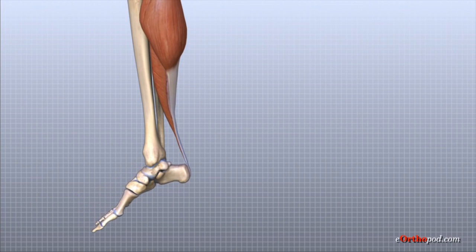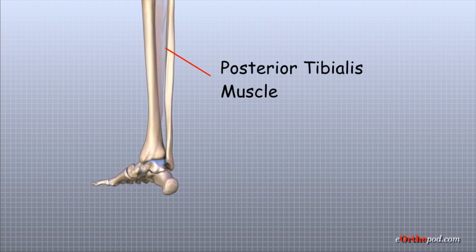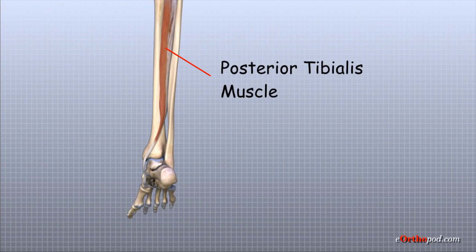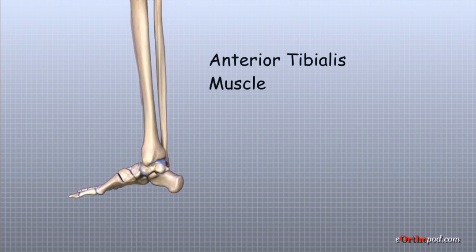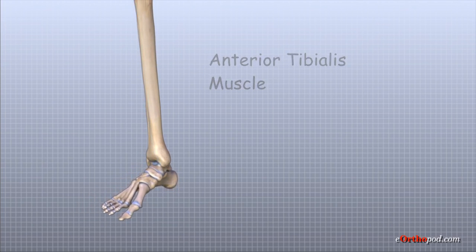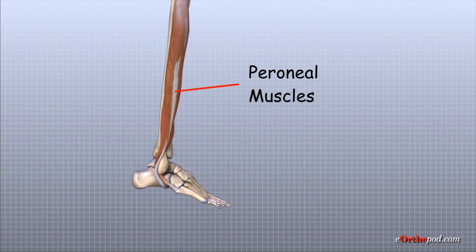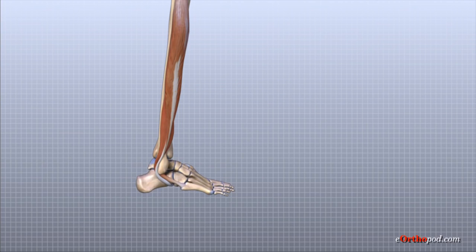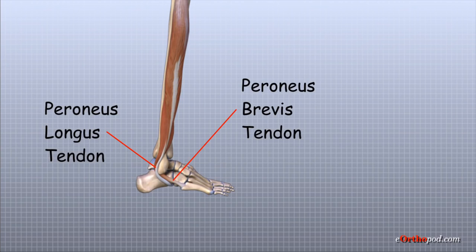The posterior tibial tendon attaches the posterior tibialis muscle in the calf to the underside of the foot, helping support the arch and allowing us to turn the foot inward. The anterior tibial tendon attaches the anterior tibialis muscle to the foot and allows us to raise the foot. The two peroneal tendons run behind the lateral malleolus and help turn the foot down and out. These are called the peroneus longus and the peroneus brevis; the brevis is the shorter of the two and attaches to the base of the fifth metatarsal, while the longus runs further before attaching under the foot.